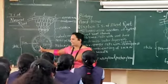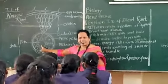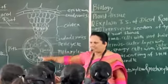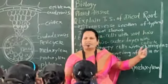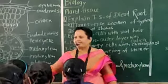Inside or at the center of stele, pith is large and number of vascular bundles are more. This is the main and the only difference between dicot root and monocot root.